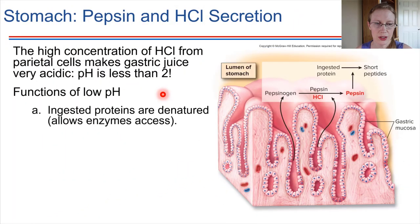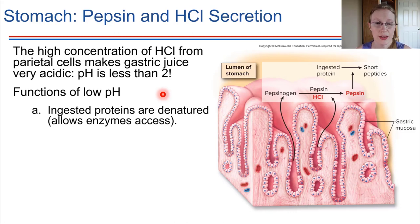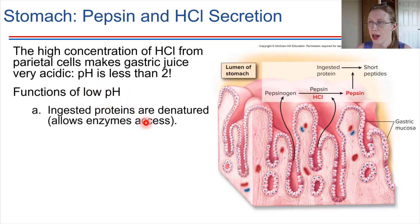Low pH causes proteins to denature. We can use heat to denature proteins, or we can use acids — low pH. This is one of the key things: it causes proteins to unfold, and that allows enzymes to have access to the peptide bonds.